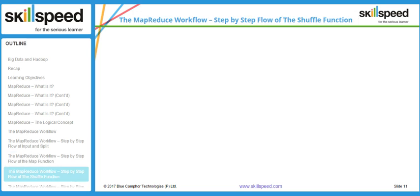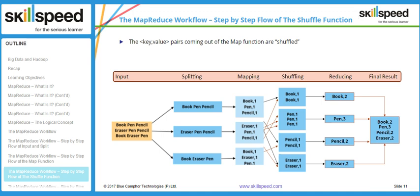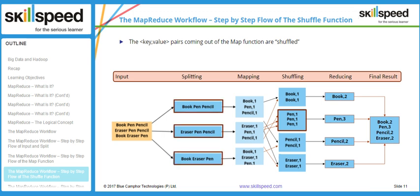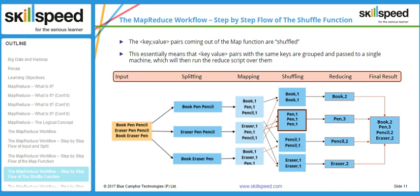The next phase is the shuffling phase. For example, the key 'book' appears on DataNode 1 and also on DataNode 3. In the shuffling phase, book,1 from DataNode 1 and book,1 from DataNode 3 are assembled at one place. Similarly, the three values of pen — pen,1, pen,1, pen,1 from three different DataNodes — are assembled together. The shuffling phase combines all values of a particular key from different DataNodes and makes them available at one place.